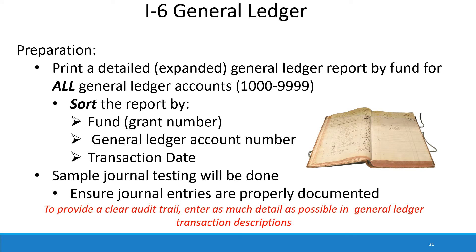The next thing we ask for is a detailed general ledger. Please provide a general ledger for the grant number and time period specified in your records request. We would prefer that you include all accounts from $1,000 to $9.99 — meaning we would like to see your cash account, accounts receivable account, and any accrual accounts. We request that the report be sorted by fund or grant number, then general ledger account number, and then transaction date. We would really like to see as much detail as possible — that's going to result in fewer questions from us.